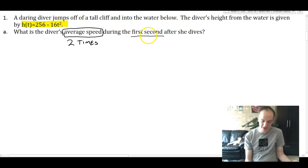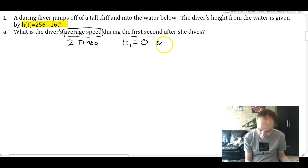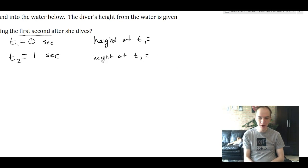But during the first second is telling us two times. It's telling us time one is zero seconds and time two is one second. So we know the times, now we need to find her height above the water at both of those seconds.